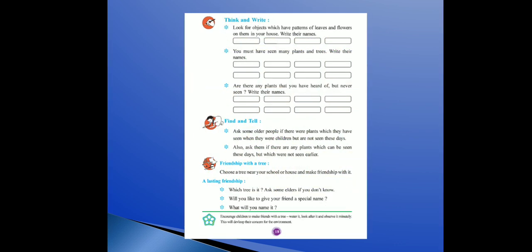Next — think and write. Look for objects which have patterns of leaves and flowers on them in your house. Write their names.